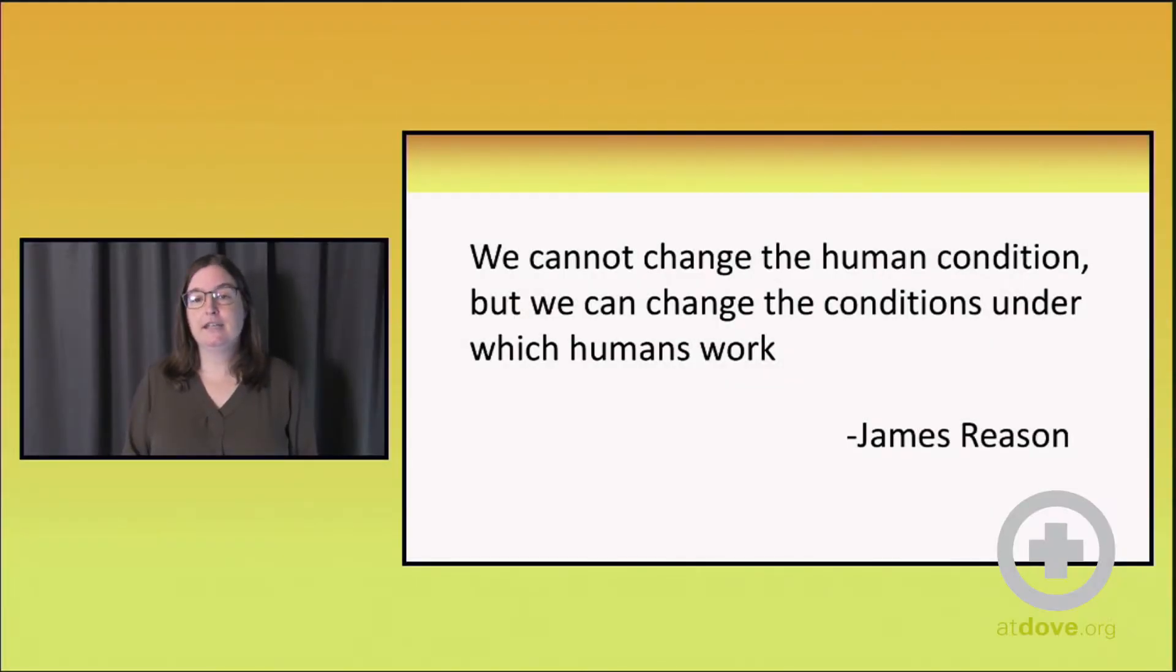James Reason is a British professor of psychology who is really the primary original researcher of error science. He stated that we cannot change the human condition, but we can change the conditions under which humans work.